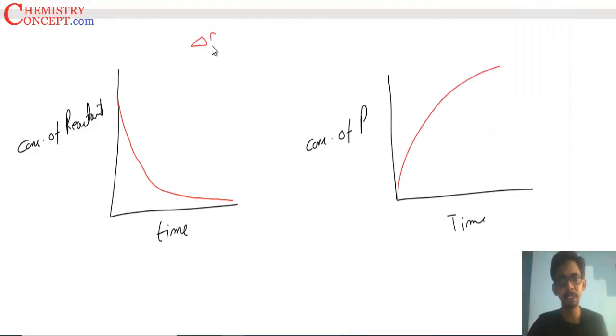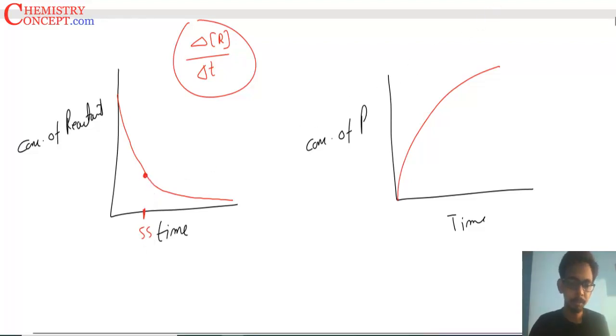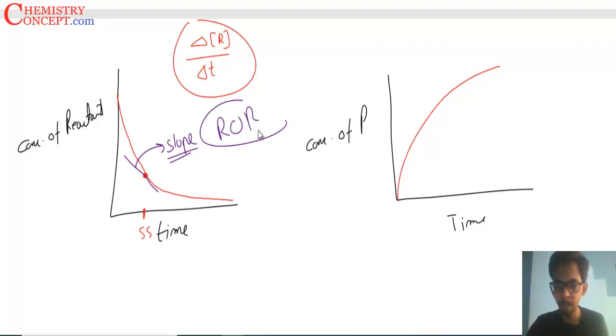Now what we calculated as change in concentration of reactant upon change in time, that is the average rate over a period of time. If I want to find the particular rate at, say, when time is five seconds, that is called instantaneous rate. How do we calculate it? At whatever time I need to find the rate, I will draw a tangent there. And the slope of this tangent will be the rate of reaction at that particular time.